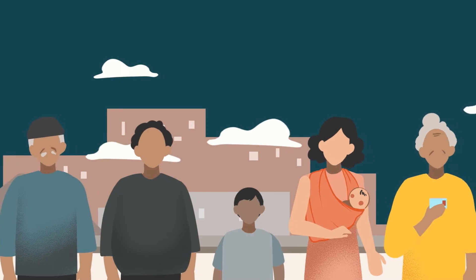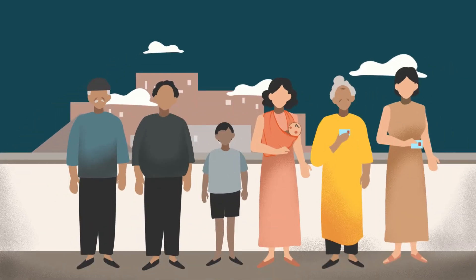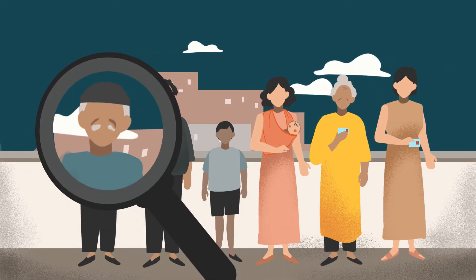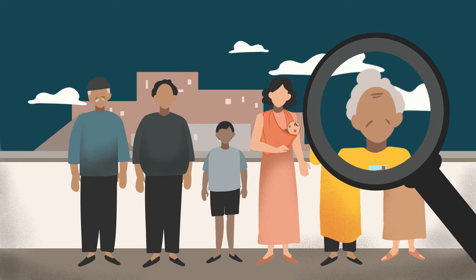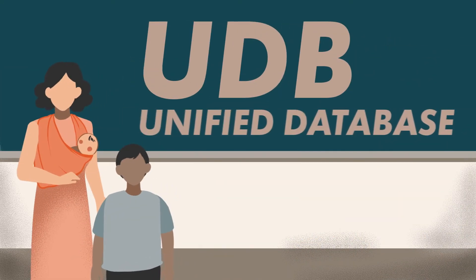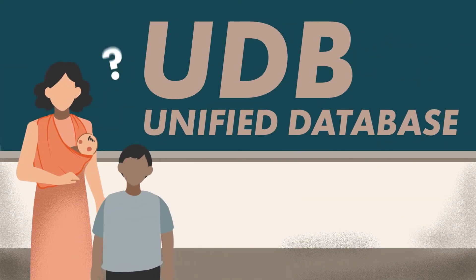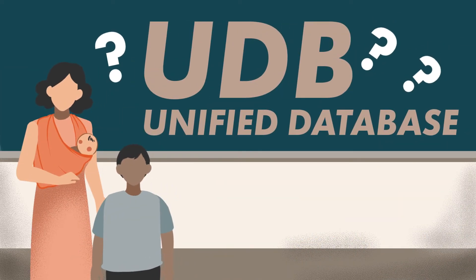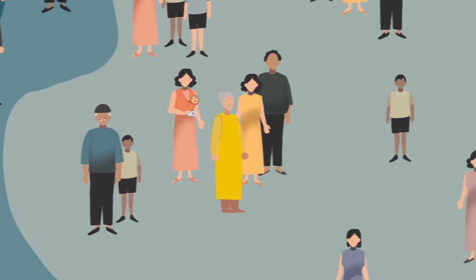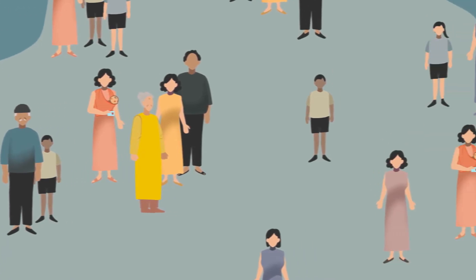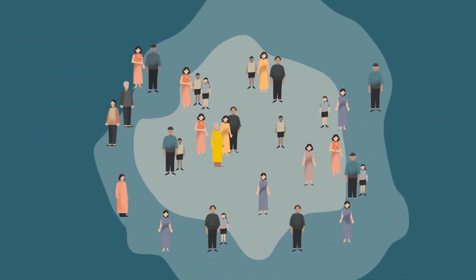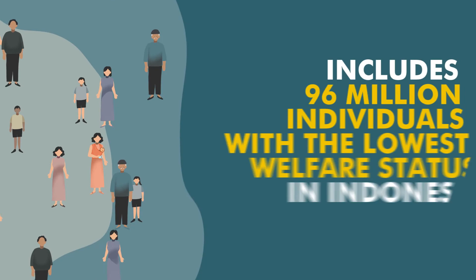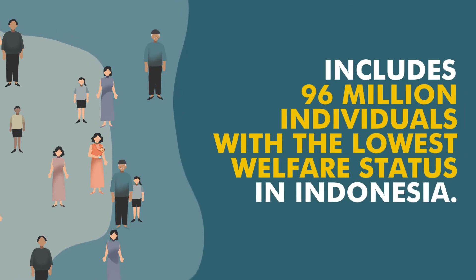But how do they know who to send these ID cards to? The government looked to its administrative data — in this case, the Unified Database, or the UDB. The UDB is an electronic database that contains social, economic, and demographic information on roughly 24.5 million households, or over 96 million individuals with the lowest welfare status in Indonesia.